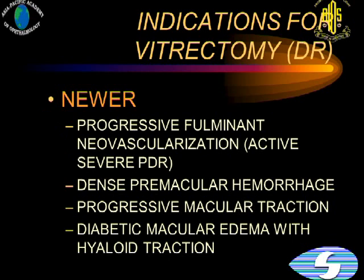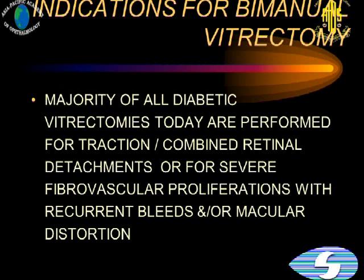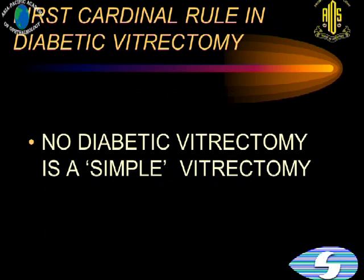These are some of the newer indications, as was being discussed here. Progressive fulminant neovascularization or active severe PDR is an indication for early vitrectomy, as are dense premacular hemorrhages and progressive macular traction. This is what the majority of vitrectomies are performed for in our experience nowadays — and not really for vitreous hemorrhage.